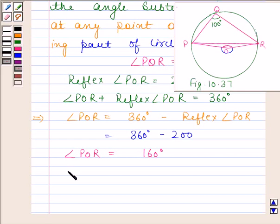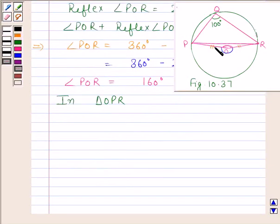Now, we will consider triangle OPR. In triangle OPR, OP is equal to OR because these are radius of the same circle.